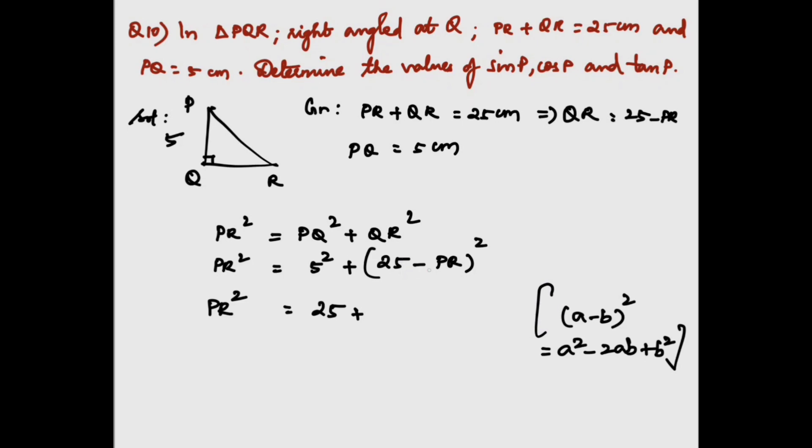Consider 25 to be a and PR to be b. So 25² - 2(25)(PR) + PR², which gives us 625 - 50PR + PR².